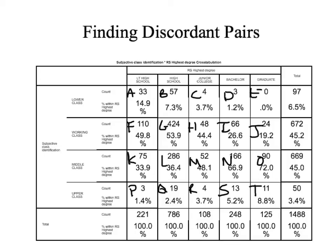When we talked about concordant pairs, we started over here with cell A, and the concordant pairs were the ones that are catty corner in that direction. This time we're going to start over here with cell E. The cells that are discordant with cell E are the cells that are lower on one variable but higher on the other. Cell E is as high as you can be on degree, but as low as you can be in social class, so the cells that are higher on social class but lower in education are the ones catty corner in this direction — those are the discordant pairs to cell E.